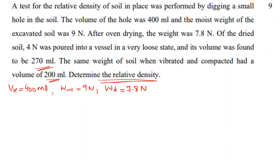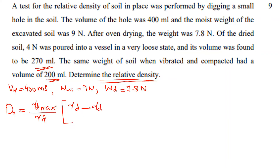This is not solved using void ratio. We use the relative density equation in terms of dry unit weight gamma_d. The equation is: Dr = (γd_max / γd) × (γd − γd_min) / (γd_max − γd_min).